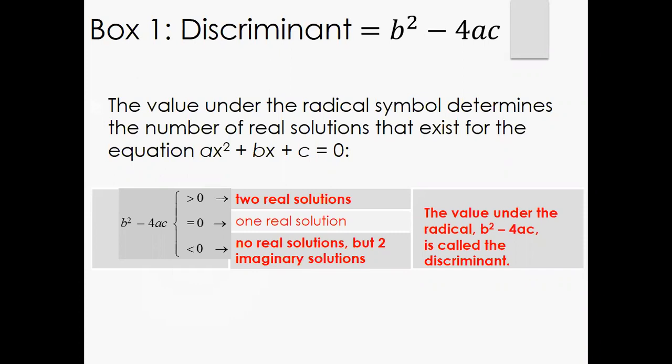Finding the discriminant alone is going to tell you what types of solutions you're going to have. So for your discriminant, if your value is greater than zero, that means positive. So if your value is greater than zero, you have two real solutions.